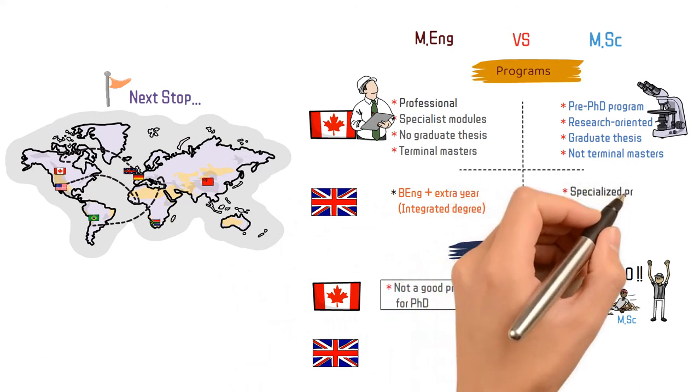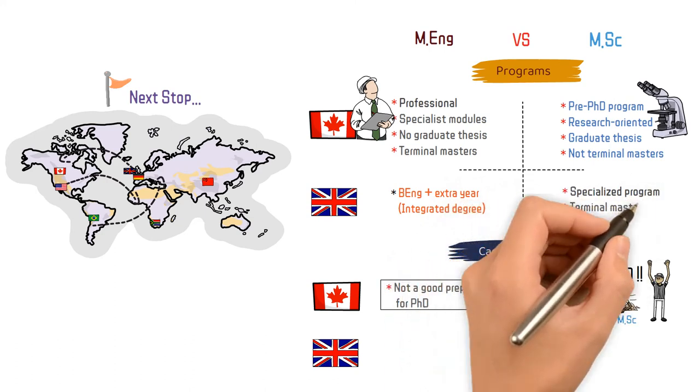On the contrary, the Master of Science is a highly specialized terminal master incorporating graduate thesis.